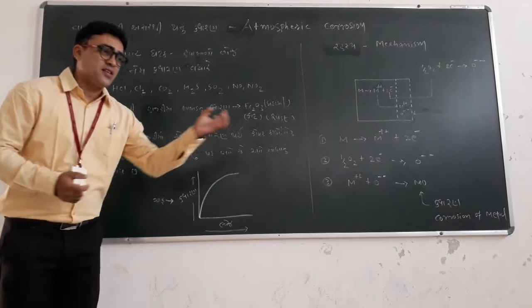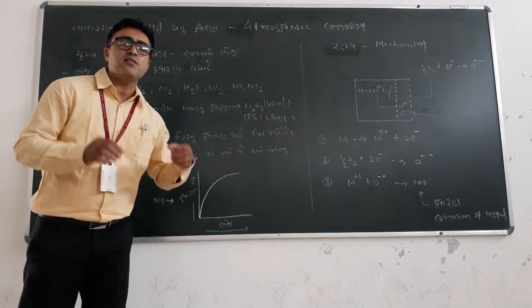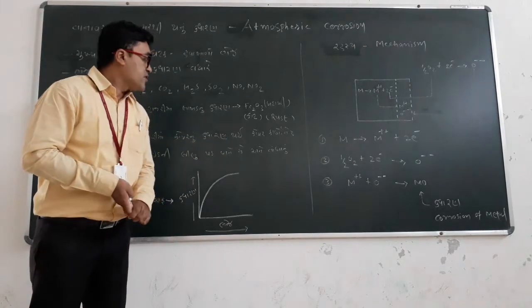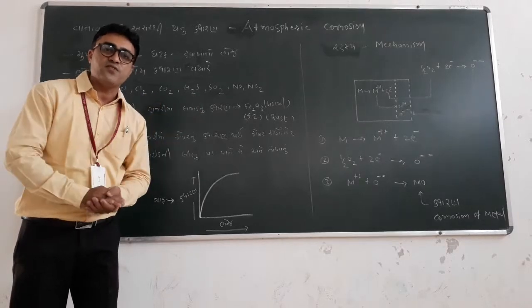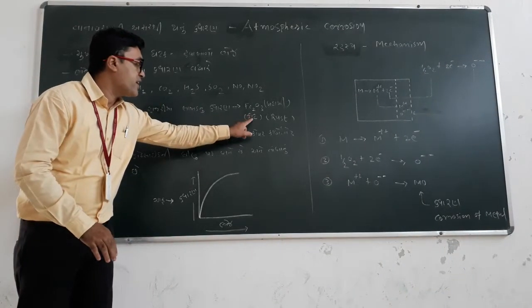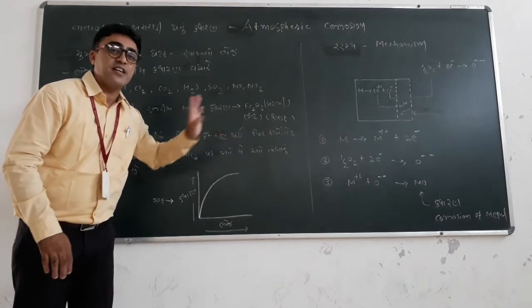Suppose if you place the iron pieces in the open atmosphere for a few months, then you will get the brown color layer on the surface of the iron. It is called rust. It is Fe2O3, iron oxide.